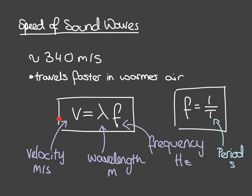We are now going to look at using the wave equation to solve some questions. Here's our wave equation: V equals f lambda. V stands for the velocity of the wave — the speed. Lambda is the wavelength of the wave, which needs to be measured in metres. F is the frequency of the wave, which needs to be measured in hertz. If you've got any prefixes in the values you're given, change those before putting them into the equation. We've also got our equation for frequency: f equals 1 over the period T, where the period is in seconds.